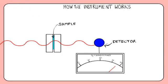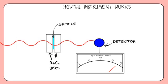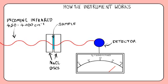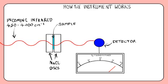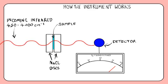A thin layer of sample is placed between two sodium chloride discs. Sodium chloride is transparent to infrared radiation. A scan is made by running different frequencies between 450 to 4000 centimetres to the minus 1. The different types of bond within a chemical absorb infrared radiation at different frequencies, since bond strengths vary for the different types of bond.